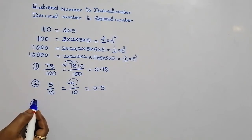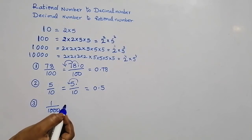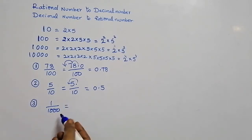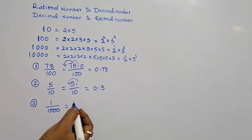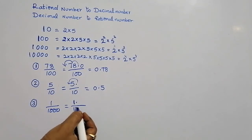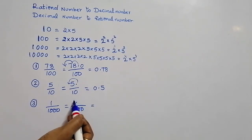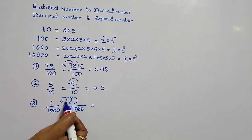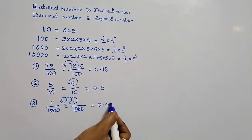The third example is 1 by 1000. In the denominator we have 3 zeros. The decimal point for 1 is after the number, and it moves 3 places towards the left side. Since we don't have any other digits, we write zeros, and the answer is 0.001.